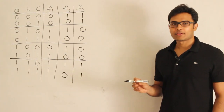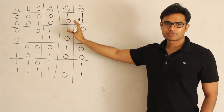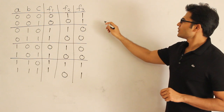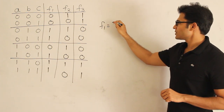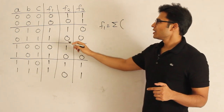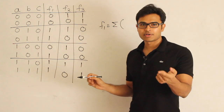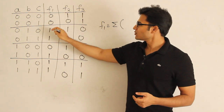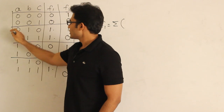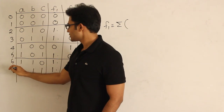Let's practice some questions on canonical forms. We have functions f1, f2, and f3, all functions of a, b, and c. Now, how can you write f1? You can represent f1 as sum of products. To do that, you take the minterms — all terms should be present — and the minterms correspond to the ones. Let me number the rows: 0, 1, 2, 3, 4, 5, 6, 7.